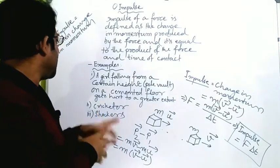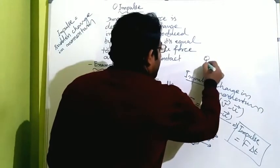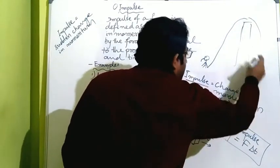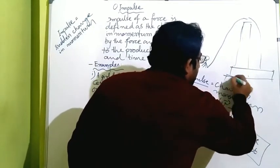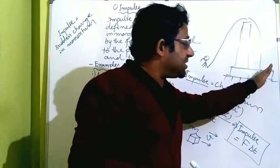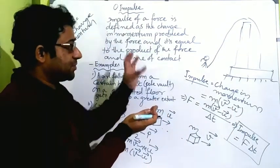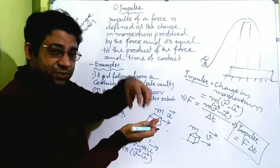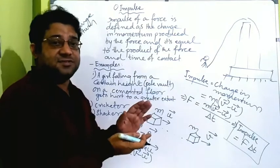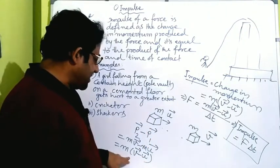Some examples to make this concept clearer. A girl falling from a certain height — you might have seen in Olympic games where a gymnast jumps to some height and falls. When she falls, there is a thick cushion provided. Why is that cushion provided? When somebody falls from a certain height and meets the floor suddenly, their velocity changes. The person touching the ground with a very great velocity suddenly comes to rest — their velocity changes to zero or very little after contact with the floor.